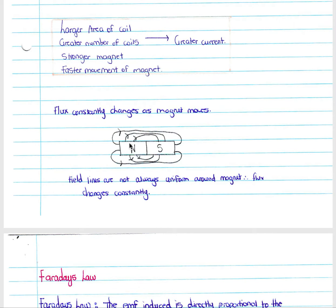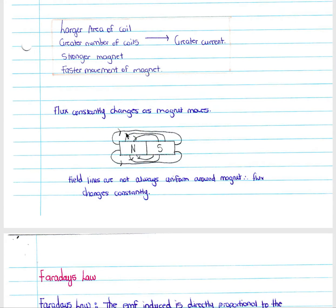Magnetic field lines go from north to south, and in a typical magnet they are not uniformly spaced. As flux constantly changes as our magnet moves, the distance between our field lines changes at different points around the magnet — they are not always uniform. Therefore our flux is constantly changing as we move through a coil. At any point in the coil, at any point in time, the flux will be different as the field lines will be at different positions at different times.